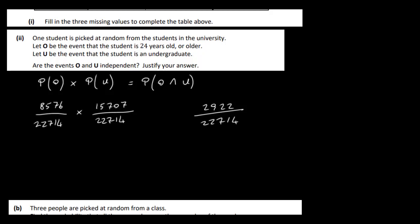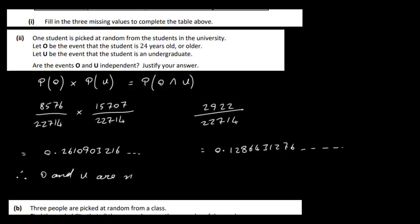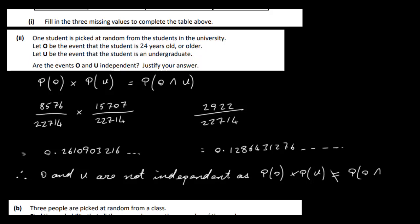When you multiply the two left-hand side values, you get approximately 0.2611. The right-hand side gives approximately 0.1286. So they are not equal. Therefore, O and U are not independent, as the probability of O times the probability of U is not equal to the probability of O intersection U.